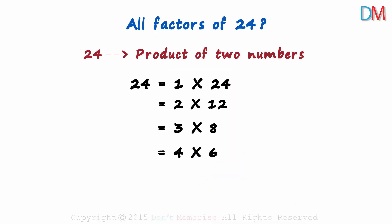That's it! There is no other product of two positive numbers that would result in 24. How do we know that all products have been covered?